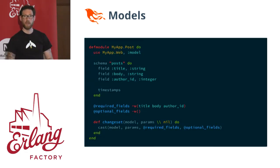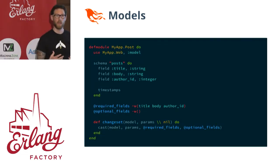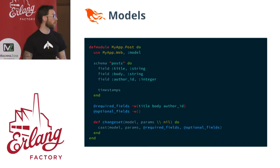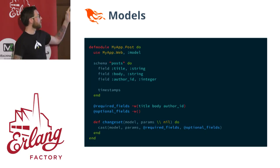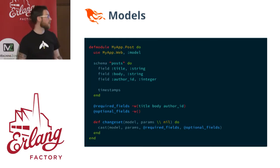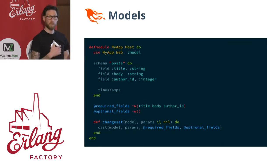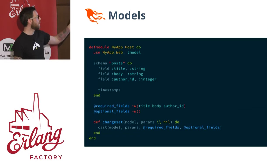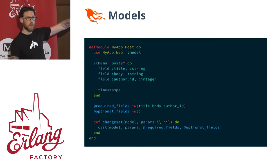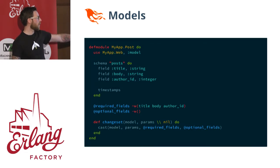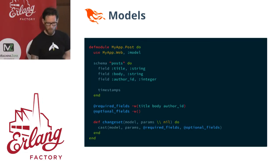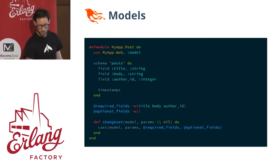Models represent the database interaction with your application. This comes from Ecto, which is a fantastic library that just basically works with Phoenix. You can tell it your schema and define validations and things like that within these changesets. This could probably have its own talk on its own.